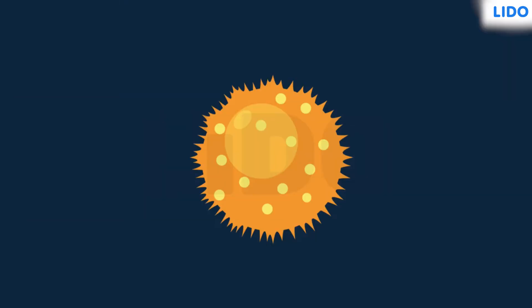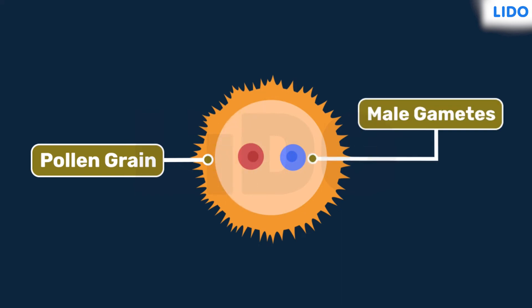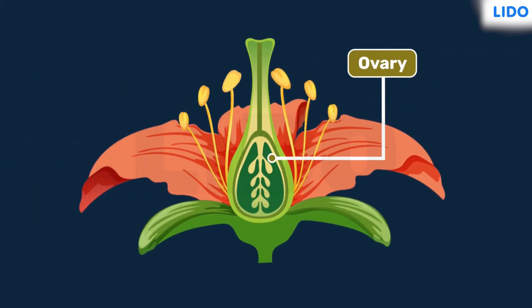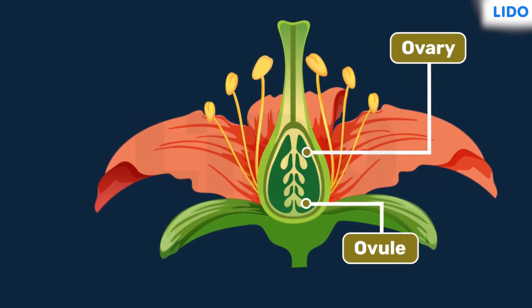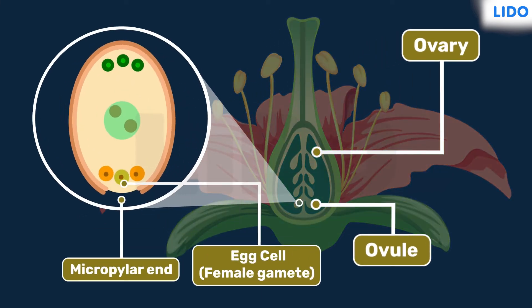In plants, pollen grain contains two male gametes. The ovary contains ovules which contain one female gamete and two polar nuclei.